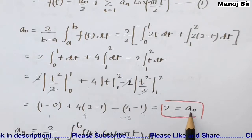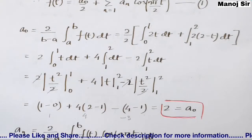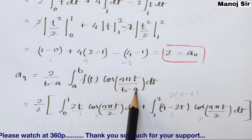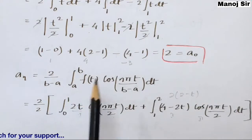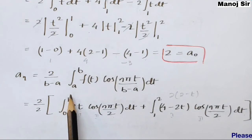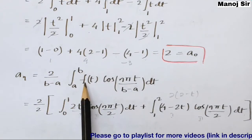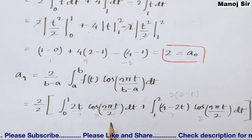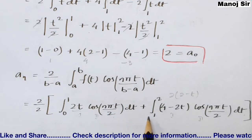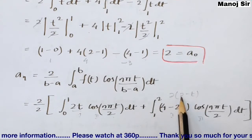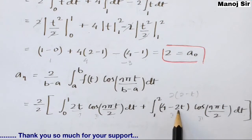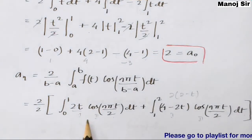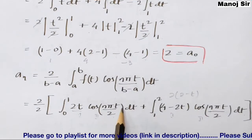So a₀ = 2. Now we find aₙ. The formula is aₙ = (2/(b−a)) · integral from a to b of f(t) · cos(nπt/(b−a)) dt. With b − a = 2, this is: integral from 0 to 1 of 2t · cos(nπt/2) dt + integral from 1 to 2 of (4 − 2t) · cos(nπt/2) dt.